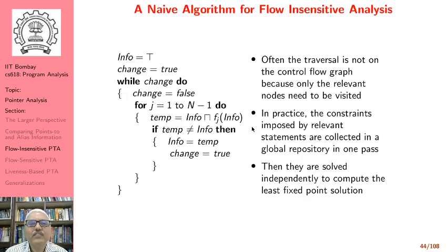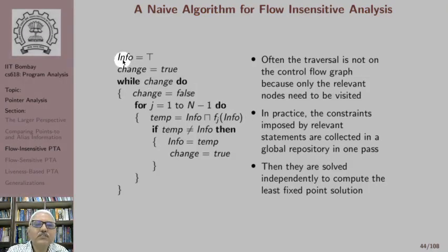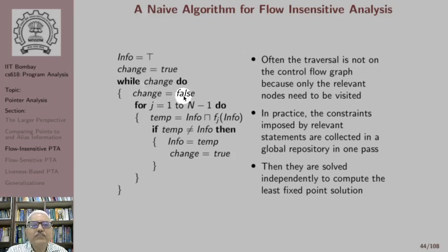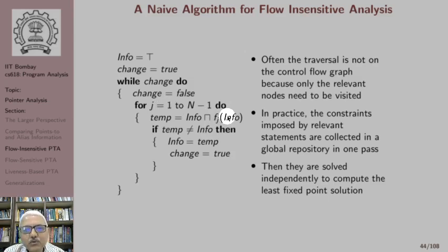Here is a naive algorithm for flow-insensitive analysis. There is a global repository of information — no information is associated with each program point. We assume the initial value is bottom, and then in a round-robin fashion we set change equal to true and iterate over all nodes. Within the while loop, we set change to false and for j equal to 1 to n-1 we compute a temporary value, which is the meet of the global info and the information obtained by applying the flow function of node j to the global information.